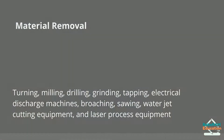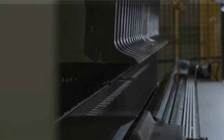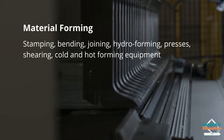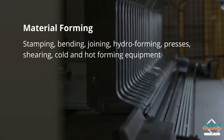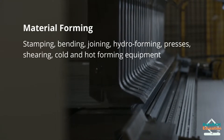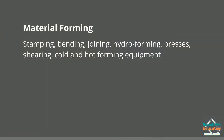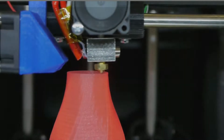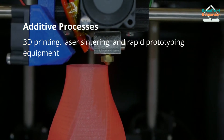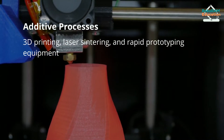Material forming includes stamping, bending, joining, hydroforming, presses, shearing, and cold and hot forming equipment. Additive processes are 3D printing, laser sintering, and rapid prototyping equipment.